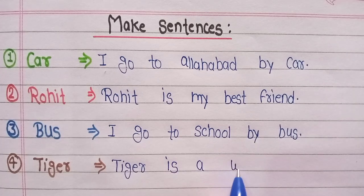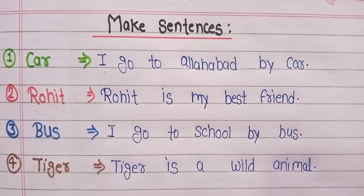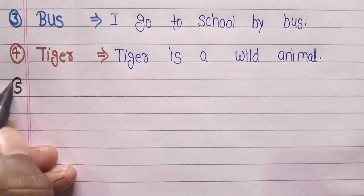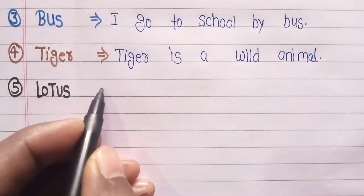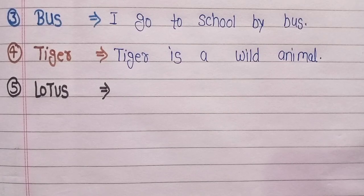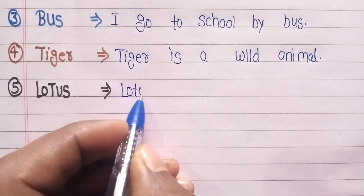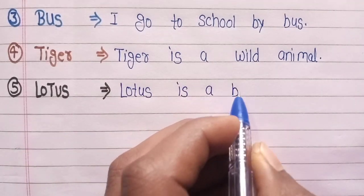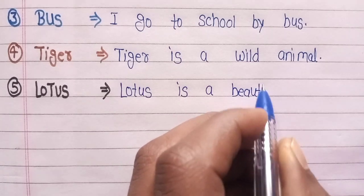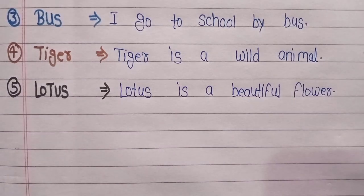Fourth line: Tiger — Tiger is a wild animal. Fifth line: Lotus — Lotus is a beautiful flower.